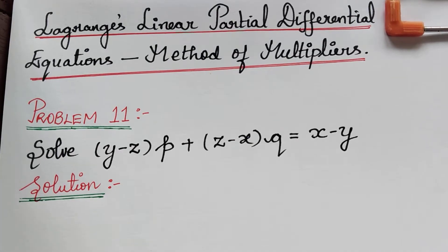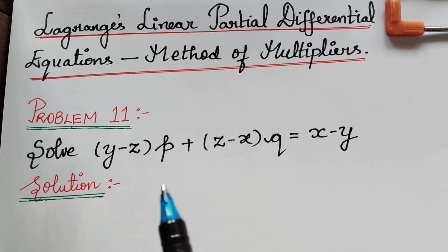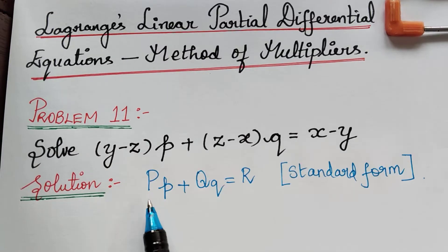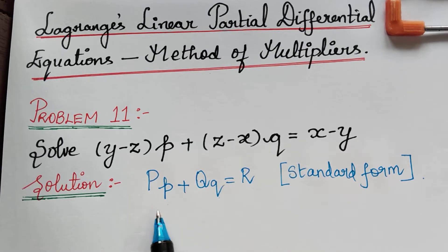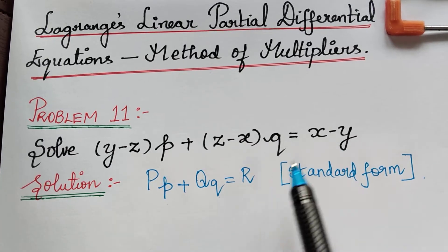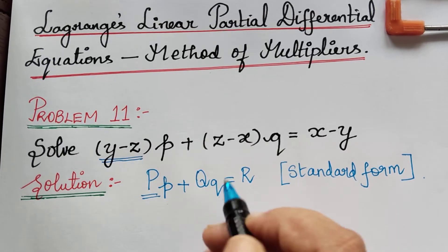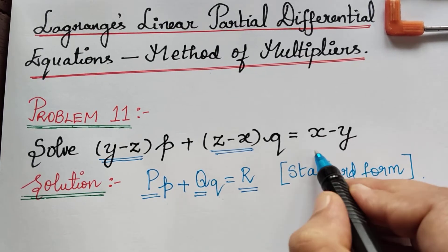Before that, let us write the common initial stage of this problem, i.e., comparing the given equation with the standard form of Lagrange's linear partial differential equation. The standard form of Lagrange's equation is given by capital P multiplied with small p plus capital Q multiplied with small q equals capital R. When we compare the given equation with the standard form, we observe that capital P is equal to y minus z, capital Q is equal to z minus x, and capital R is equal to x minus y.